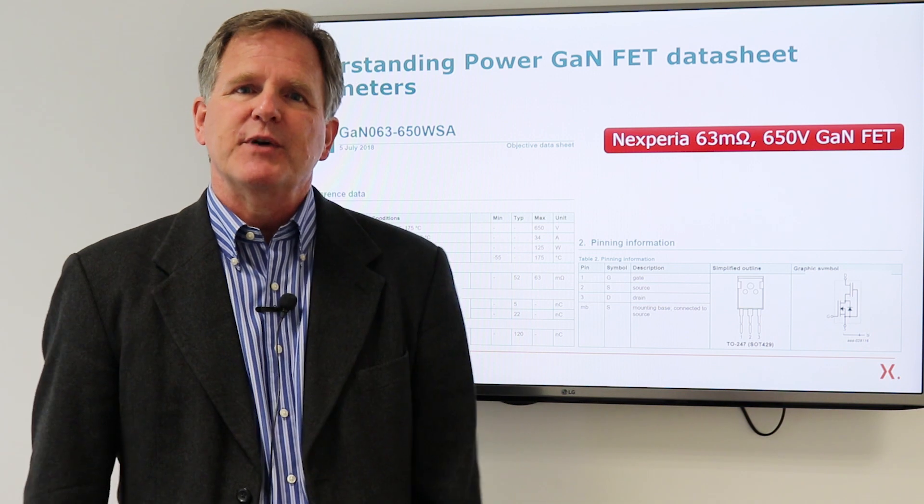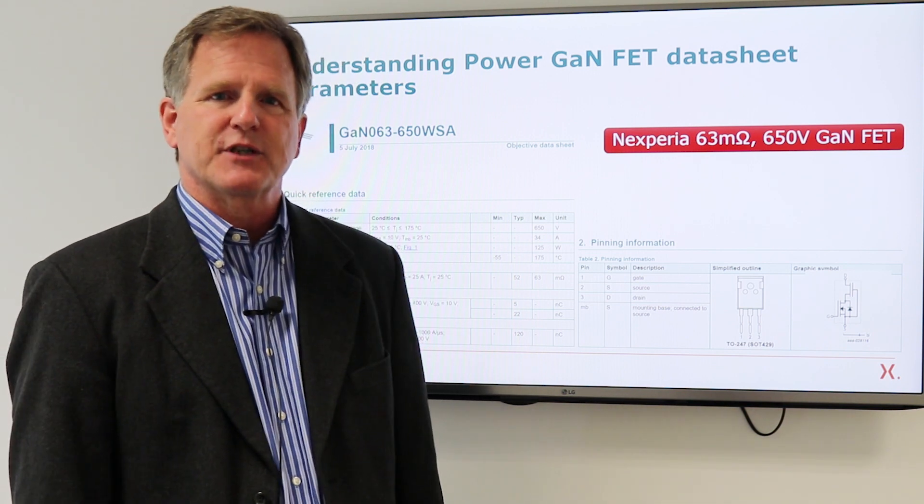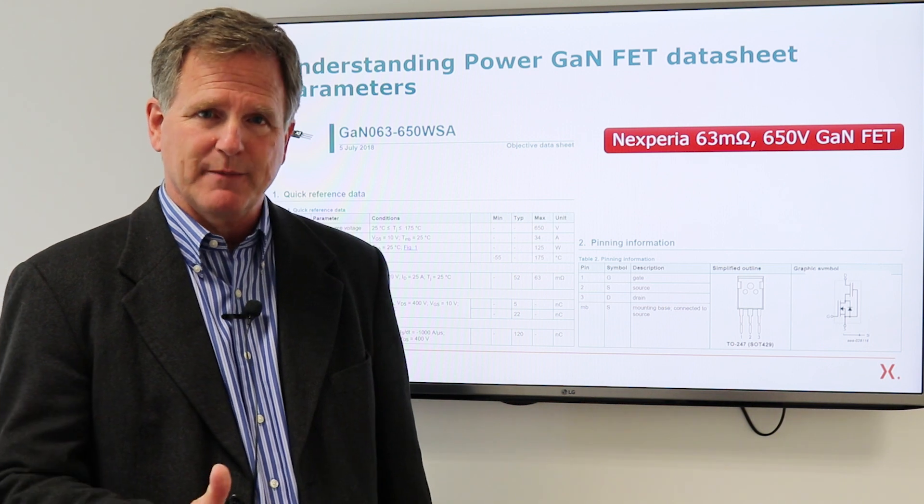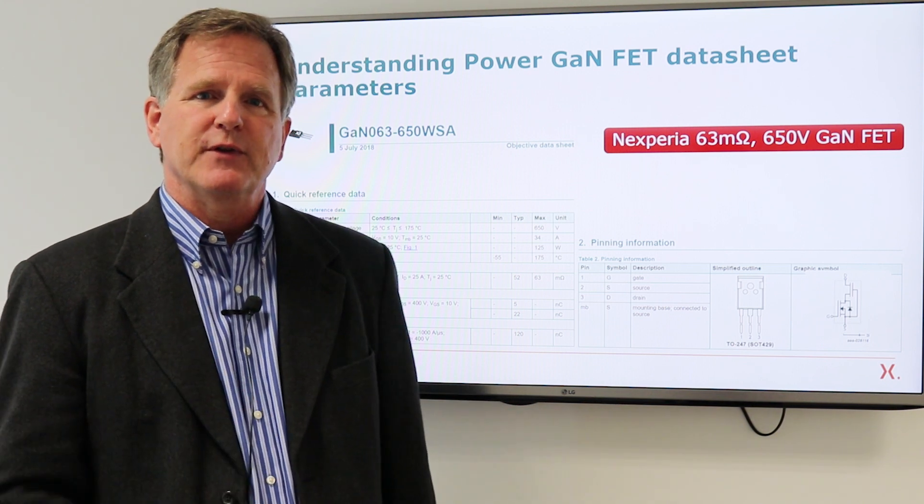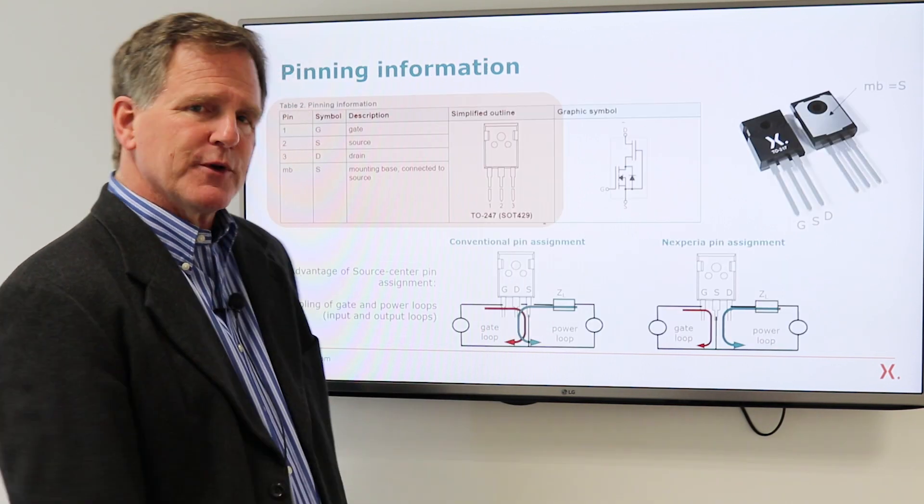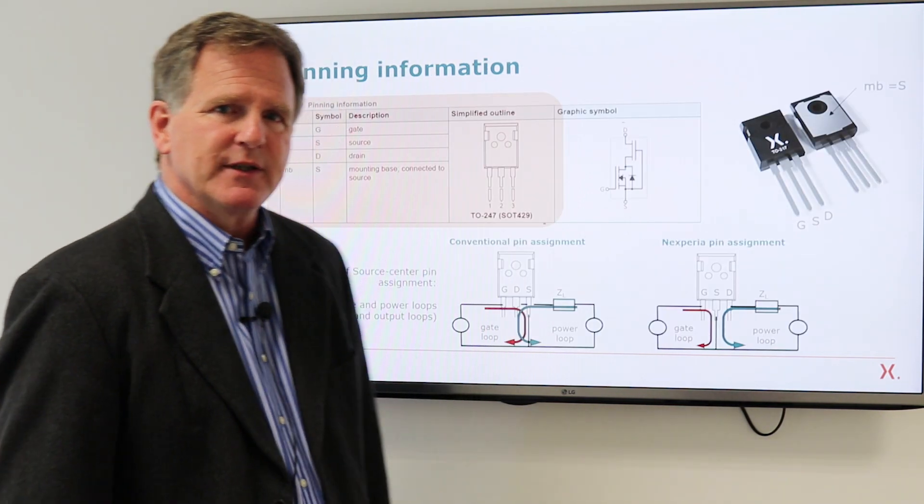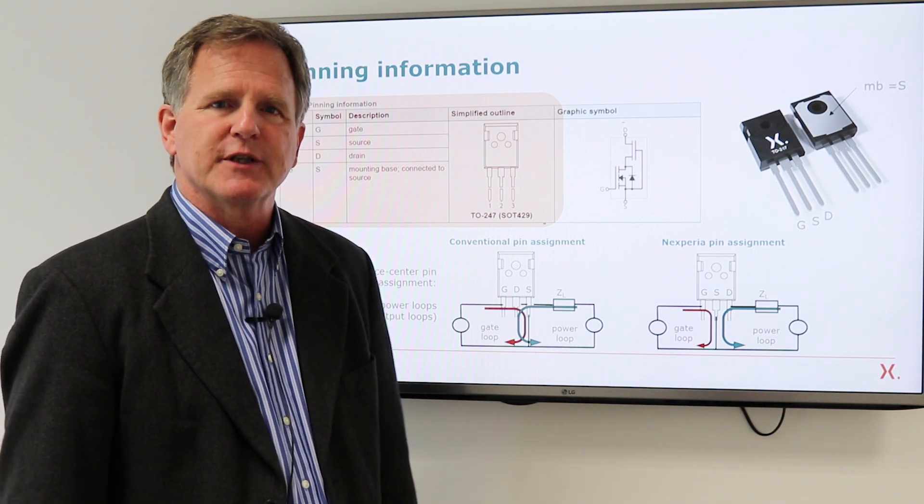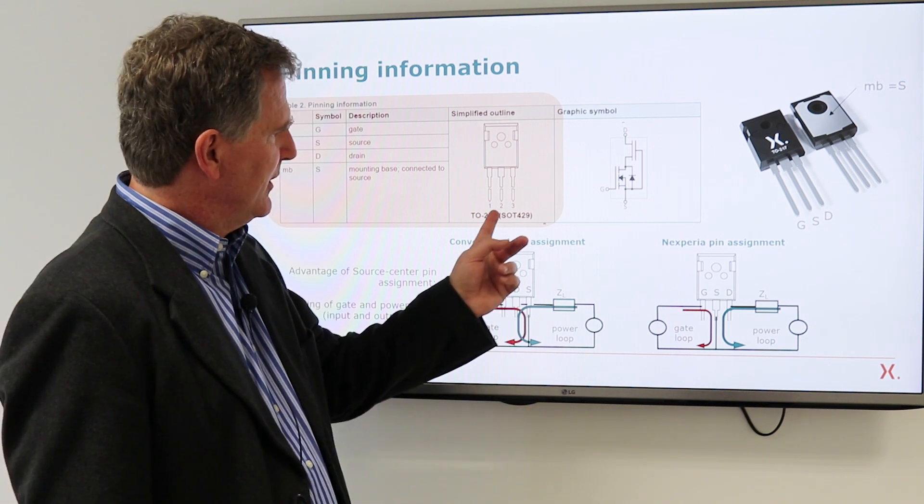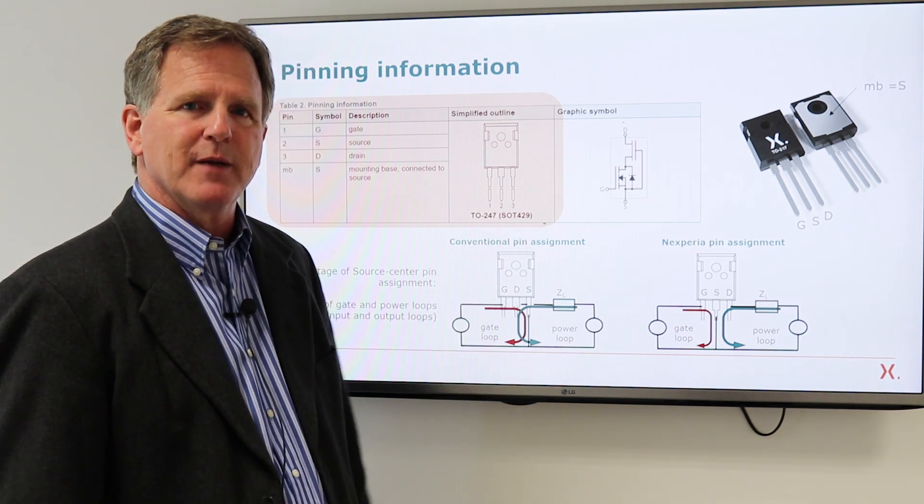We're going to use this as an example, the Nexperia GAN 063-650WS. That's a 63 milliohm room temperature max, 650 volt GAN power FET. First section is pinning information. Now this device comes in the traditional TO247 package, very familiar to power circuit designers. One thing that's not familiar is the pin assignment.